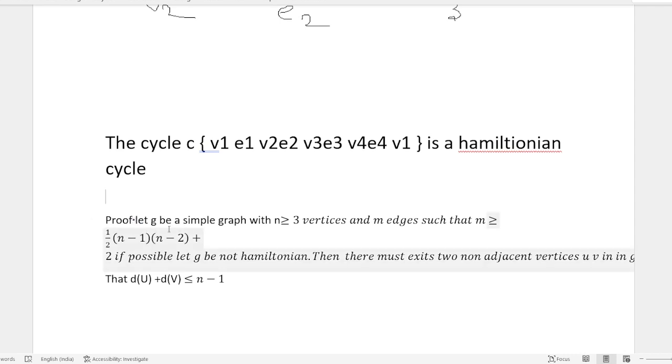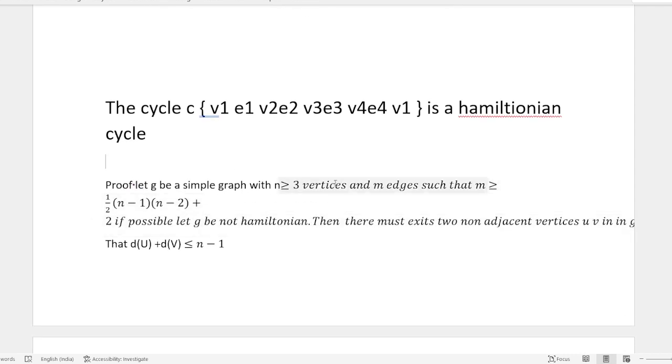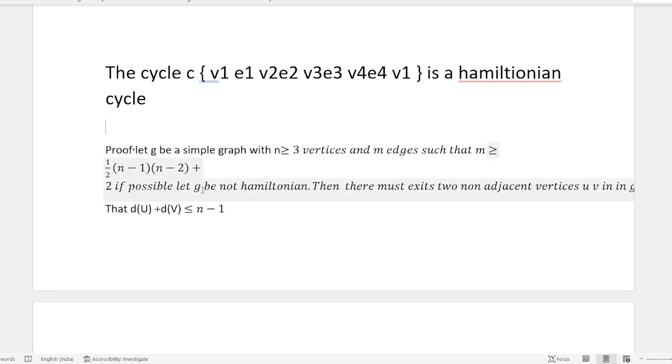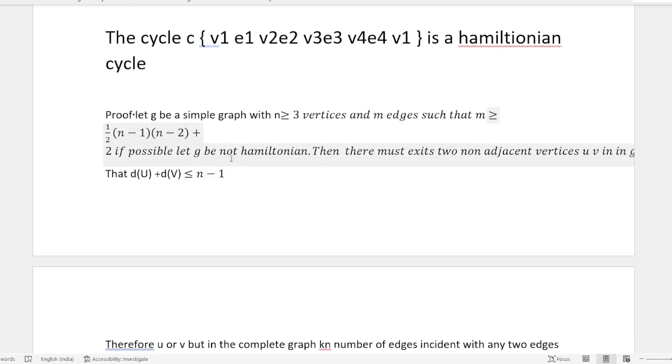Proof: Let G be a simple graph with n ≥ 3 vertices and m edges such that m ≥ 1/2(n-1)(n-2) + 2. If possible, let G be non-Hamiltonian. Then there must exist two non-adjacent vertices u, v in G.